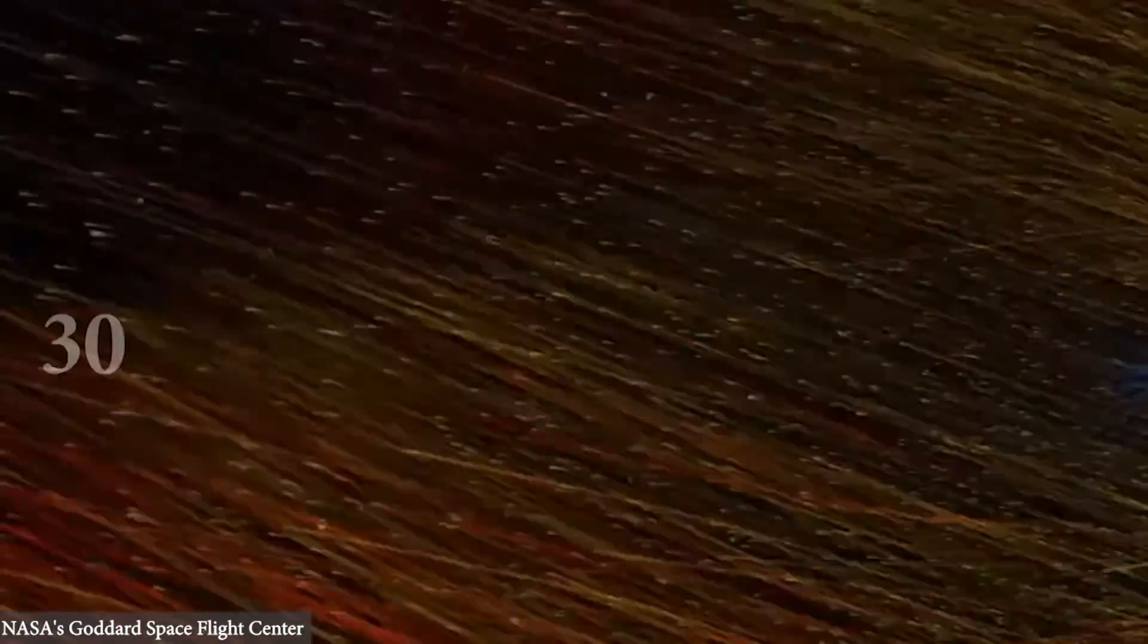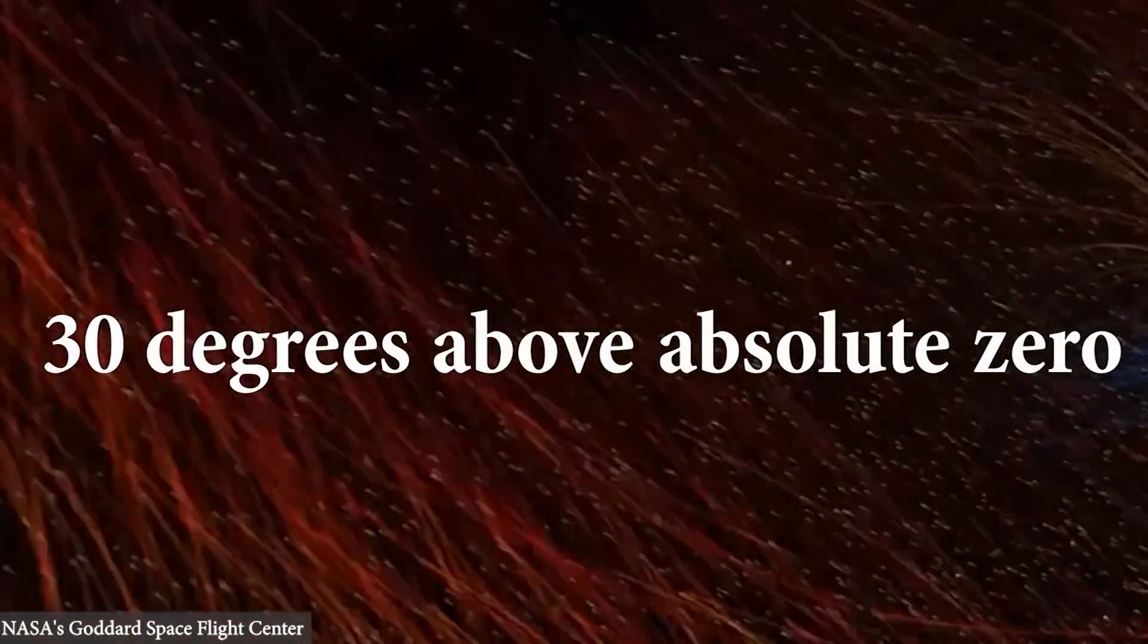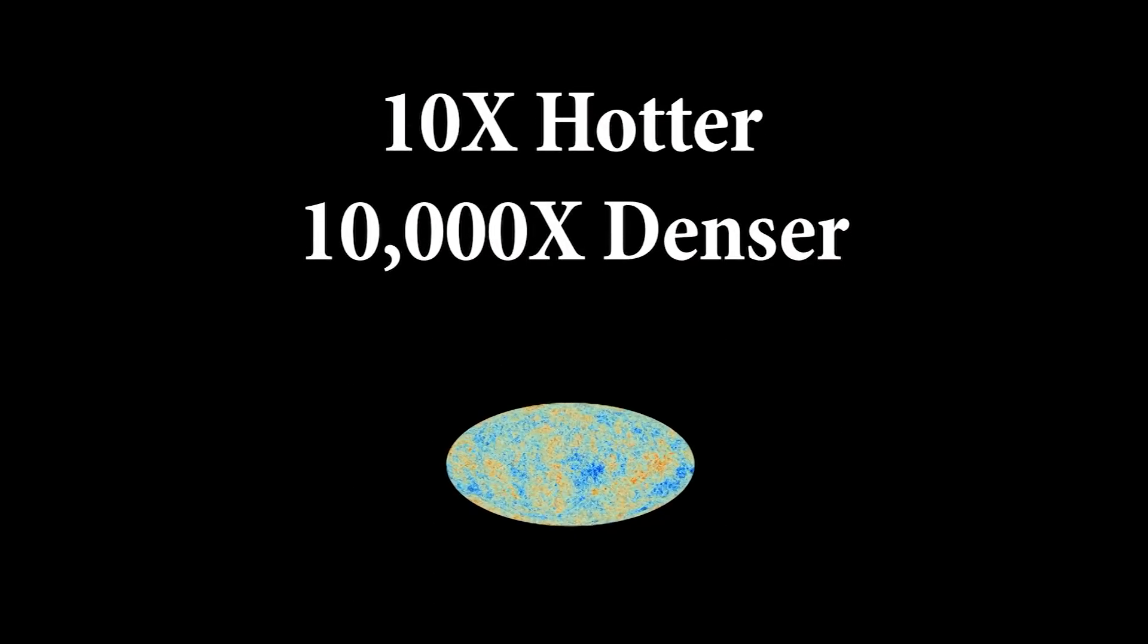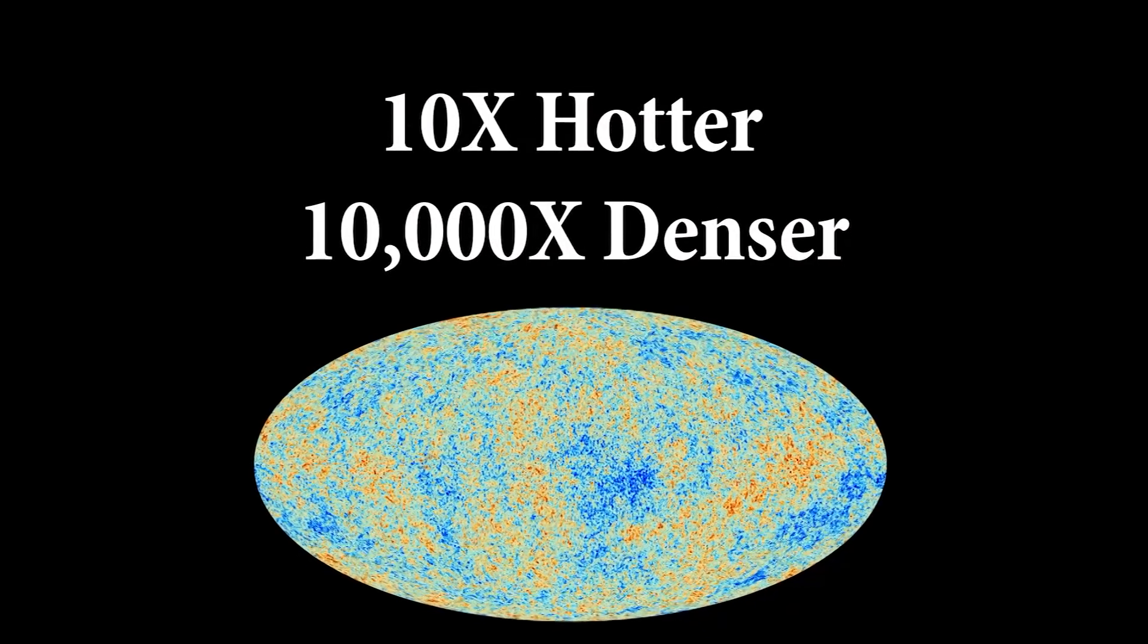If all the dark energy is converted to heat, it would bring an unlimited volume swept up by the burning front to a temperature of 30 degrees above absolute zero, 10 times hotter and 10,000 times denser in energy than the radiation of the cosmic microwave background left over from the hot Big Bang.